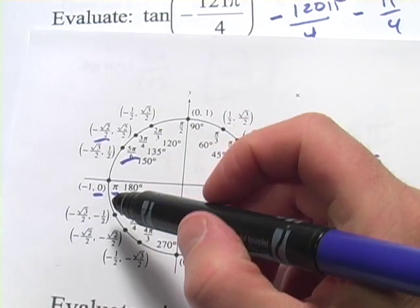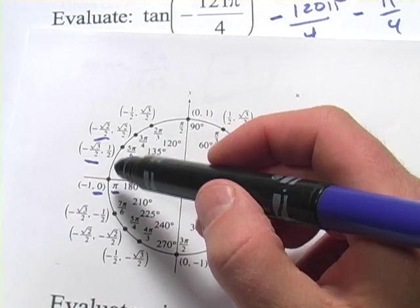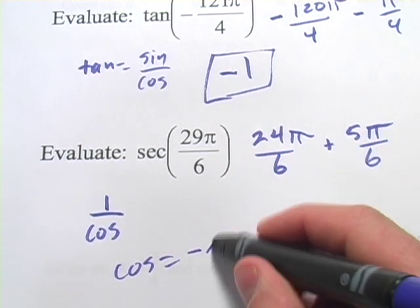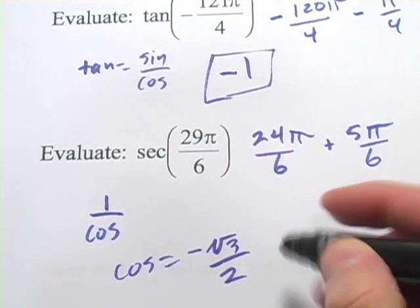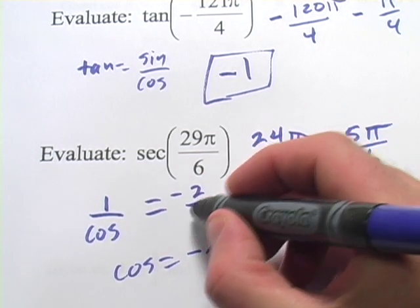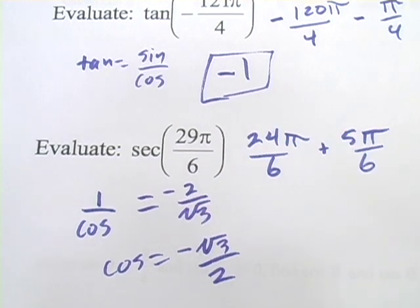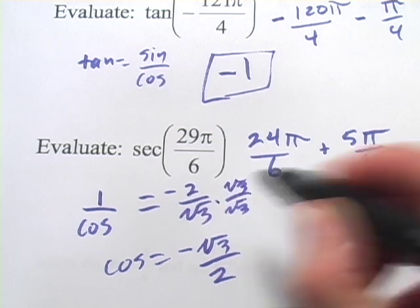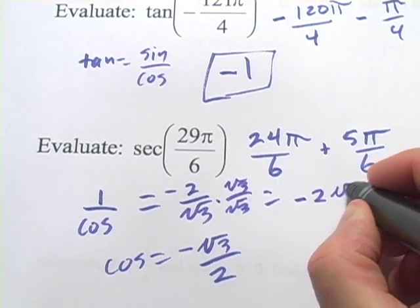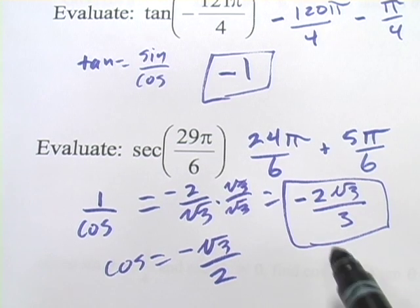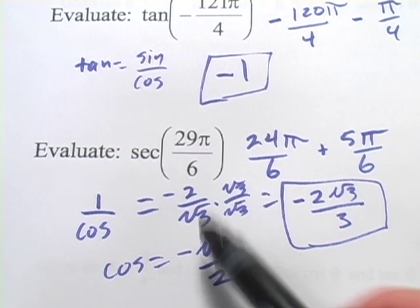And I'm looking for the secant, which is 1 over the cosine. So let's take the cosine value. It's negative square root of 3 over 2. So the cosine equals negative square root of 3 over 2. So the secant then equals negative 2 over the square root of 3. But we usually don't like radicals in the denominator. So we'll multiply by square root of 3 over square root of 3. And we get negative 2 times the square root of 3 over 3. And that is our exact value for the secant of 29 pi over 6.